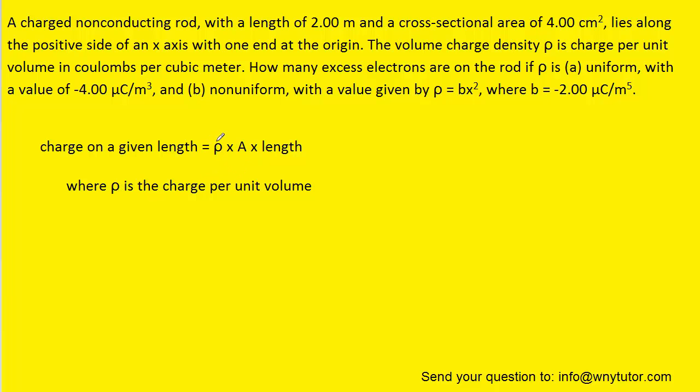It might help to understand this by looking at the units of each of these three variables. The ρ, as stated, has a charge per unit volume, so that would be coulombs over meters cubed. Area, of course, has a unit of meters squared, and then length has a unit of just meters. So if we multiply meters squared by meters, we get meters cubed, which would cancel with the meters cubed on the bottom and give us a total unit of charge.